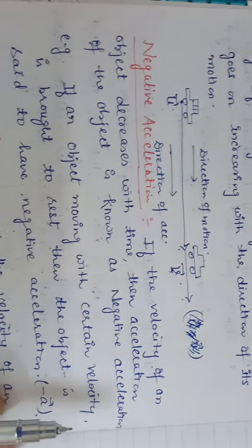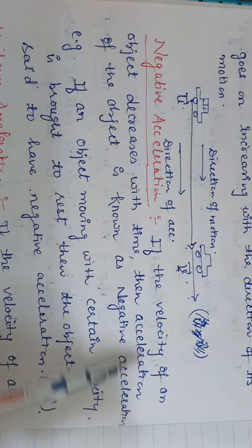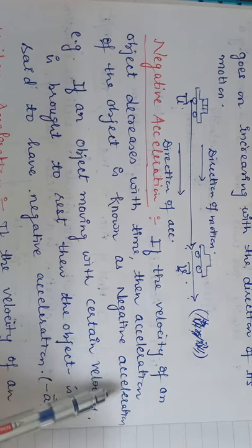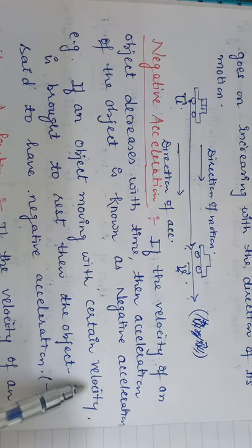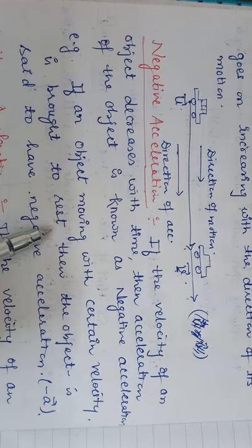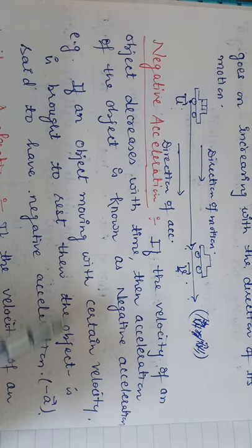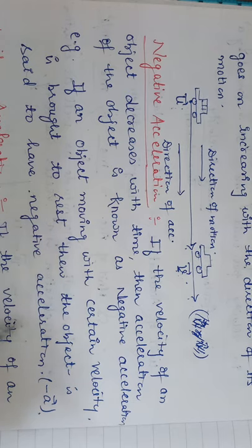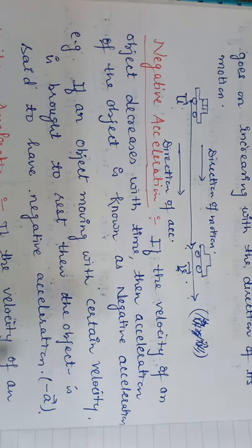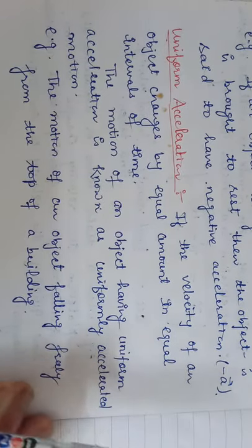Negative acceleration: if the velocity of an object decreases with time, the acceleration of the object is known as negative acceleration. This type of acceleration is also known as retardation. For example, if an object moving with a certain velocity is brought to rest — such as when brakes are applied to a moving vehicle and the vehicle comes to rest — the object is said to have negative acceleration.